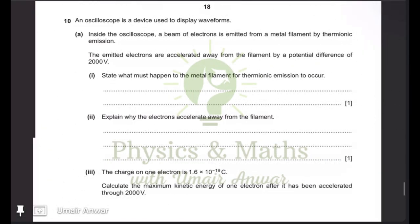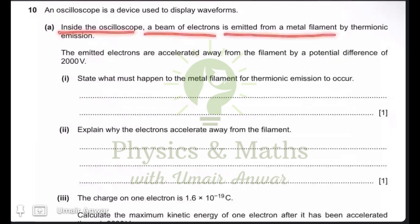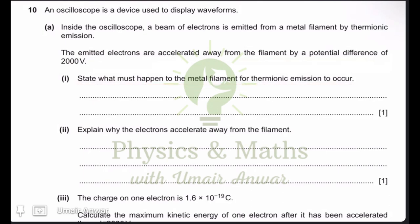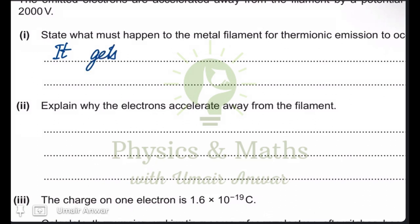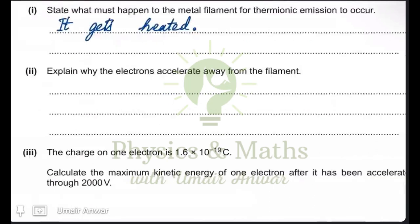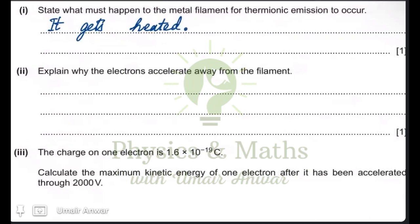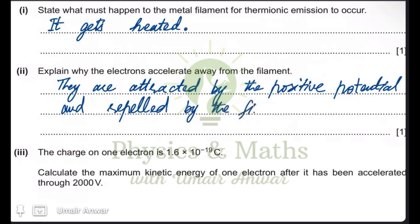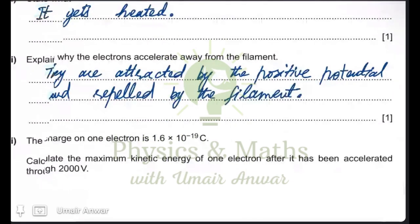An oscilloscope is a device used to display waveforms. Inside the oscilloscope, a beam of electrons is emitted from a metal filament by thermionic emission. The emitted electrons are accelerated away from the filament by a potential difference of 2000 volts. Thermionic emission occurs when the filament gets heated and, because of having a higher temperature, electrons start to emit. The electrons are attracted by a positive potential and repelled by the filament because it is at negative potential, which is why they accelerate away from the filament.